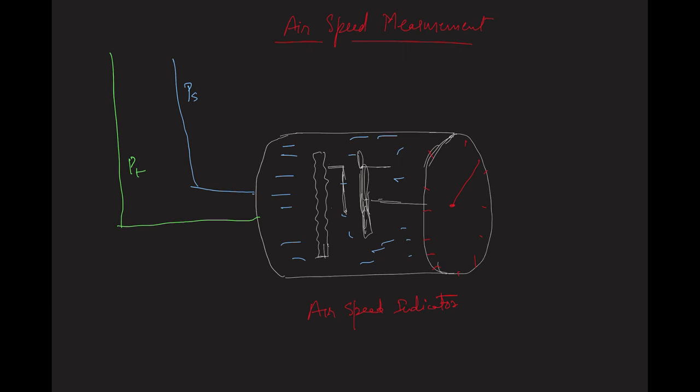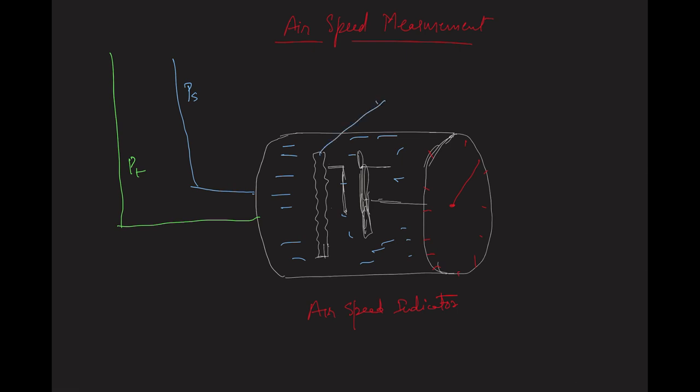This is a block diagram of an airspeed indicator. The total pressure line and static pressure lines are connected to this airspeed indicator. Inside the airspeed indicator, this part is known as the diaphragm.